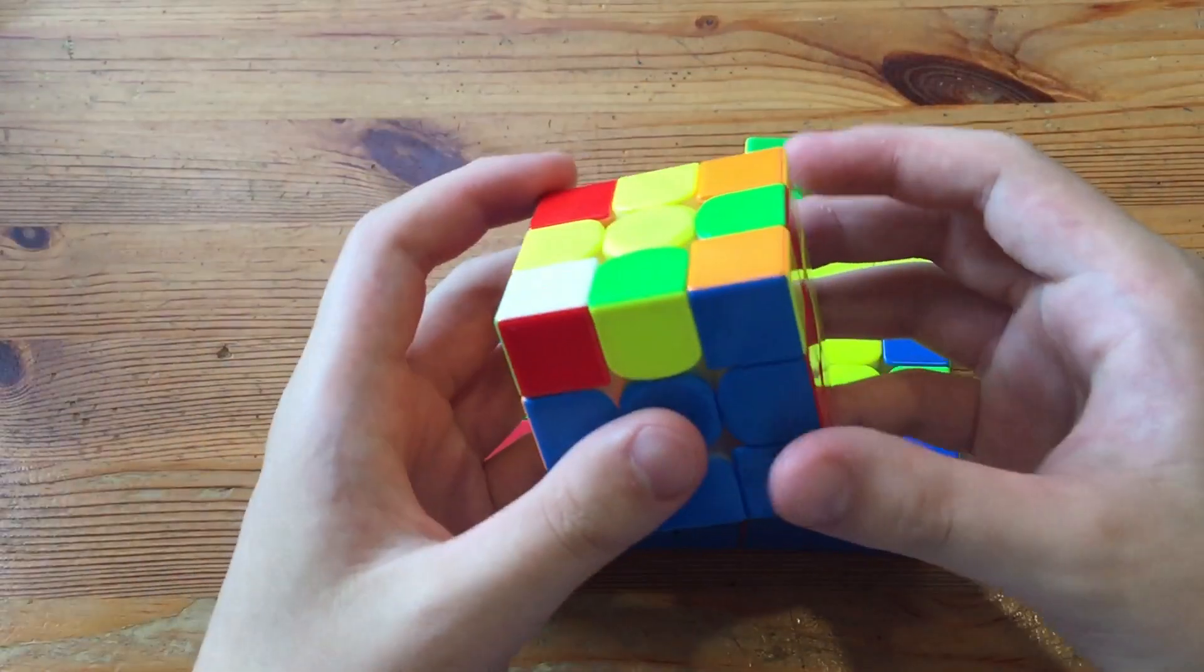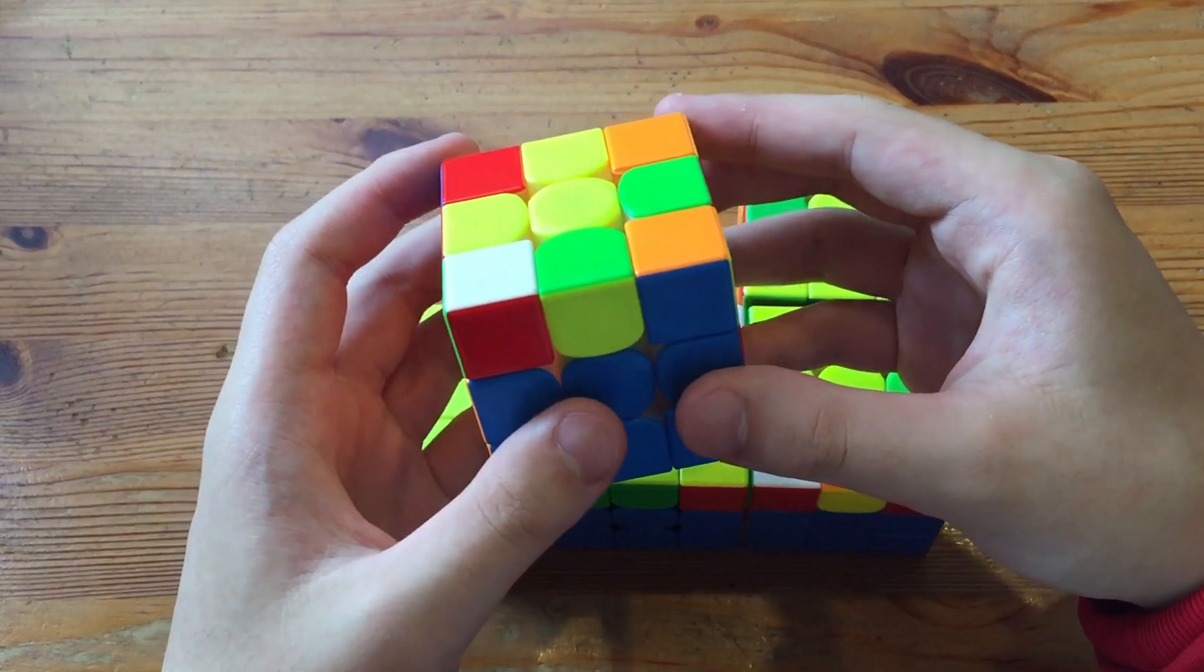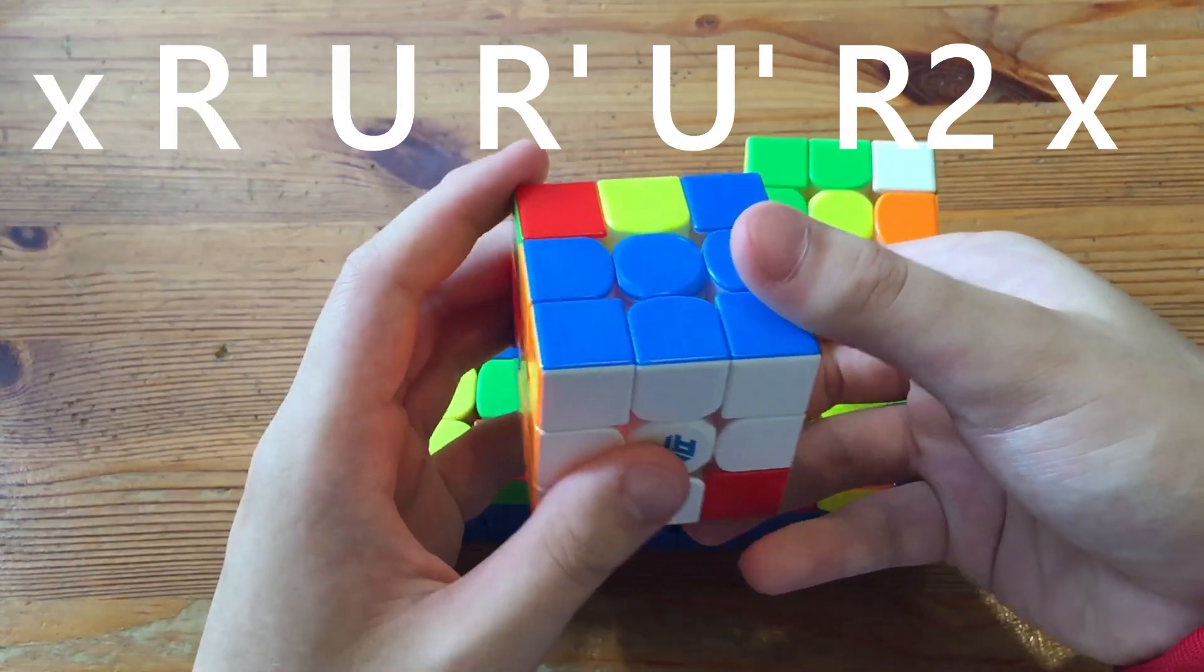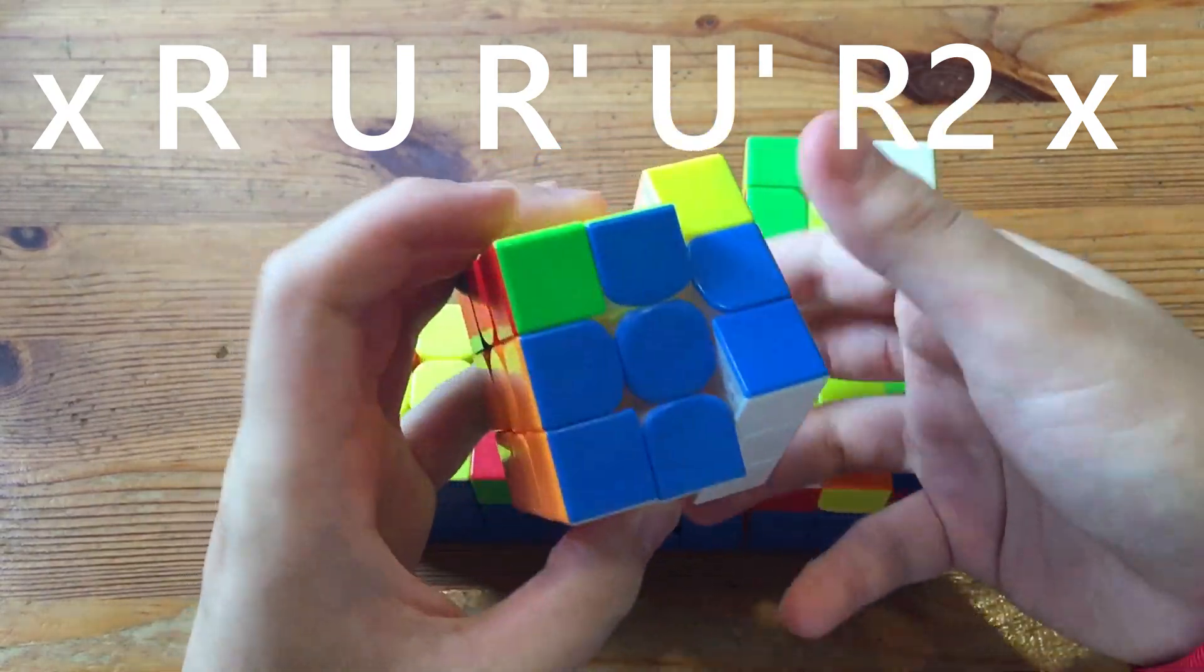And the second way is just the same algorithm but finger-tricked in a different way, and basically from this angle it would be X R' U R' U' R2.